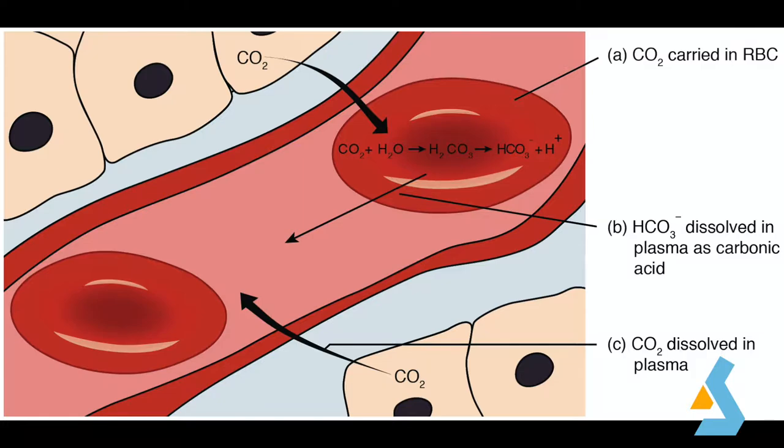The bicarbonate buffer system is an acid-base homeostatic mechanism involving the balance of carbonic acid, bicarbonate ion, and carbon dioxide in order to maintain pH in the blood and tissues and to support proper metabolic function. Catalyzed by carbonic anhydrase, carbon dioxide reacts with water to form carbonic acid, which in turn rapidly dissociates to form bicarbonate ion and a hydrogen ion.